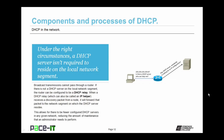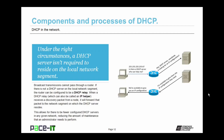Under the right circumstances, a DHCP server isn't required to reside on the local network segment. As a general rule, broadcast transmissions cannot pass through a router. But if there is not a DHCP server on the local network segment, the router can be configured to be a DHCP relay — also called an IP helper. When a DHCP relay receives a discovery packet from a node, it will forward that packet to the network segment on which the DHCP server resides. This allows for fewer configured DHCP servers in any given network, reducing the amount of maintenance an administrator needs to perform.